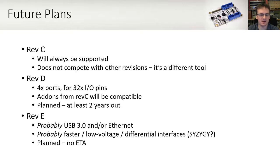Revision D will increase the IO count to 32 pins by adding two additional ports. It will also maintain compatibility with existing Rev-C add-ons. There's a mini spec on GitHub if you're interested, but no work has really been done on this yet, and it's planned but likely more than two years out. Revision E then probably makes use of USB 3 and/or Ethernet. It will likely deal with faster, low voltage and differential interfaces, and will probably make use of Syzygy connectors. It may even support things like MIPI. This is not at all suitable for what the Rev-C is used for. There's no spec on this and no work has been done yet — it's far out on the horizon.